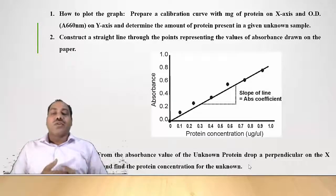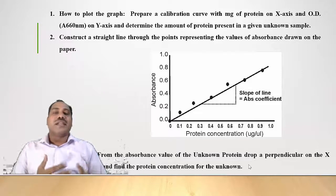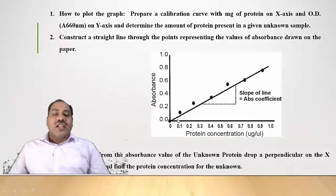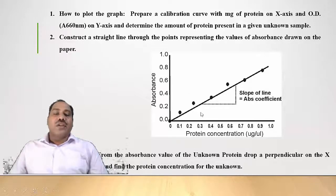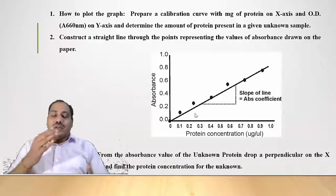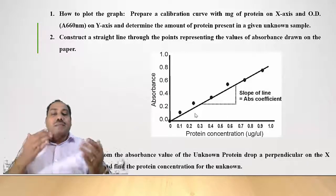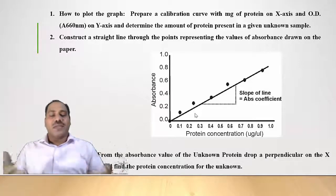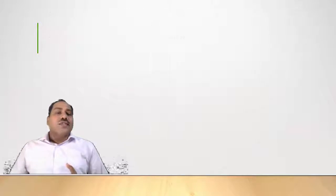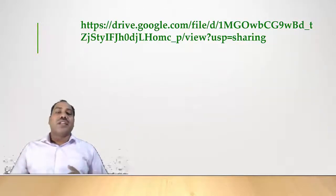Alternatively, we can calculate using the Beer-Lambert equation: Absorbance = ε × c × l, where c is concentration and ε is the molar extinction coefficient. At each point, ε can be calculated as ε = Absorbance / concentration. The average ε value is determined, and the concentration of the unknown sample is then calculated as: concentration = Absorbance / ε.